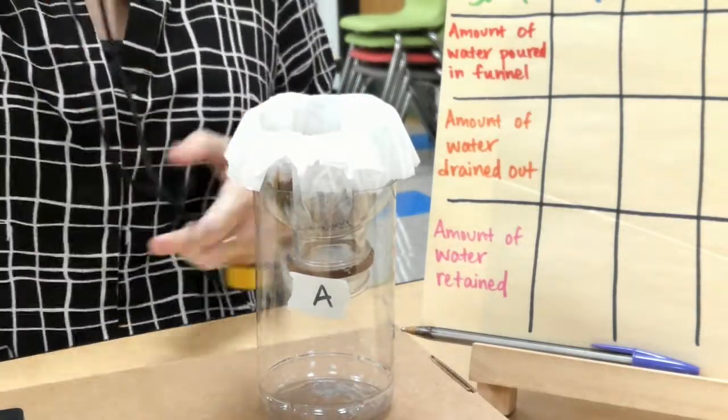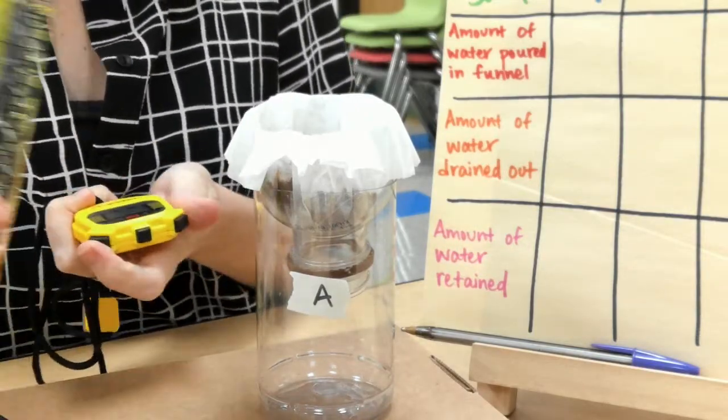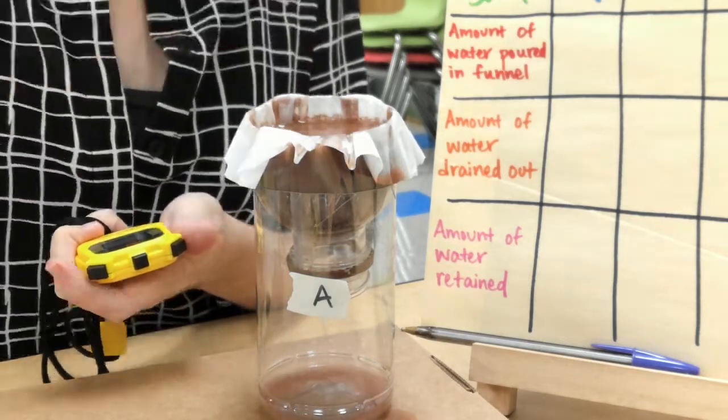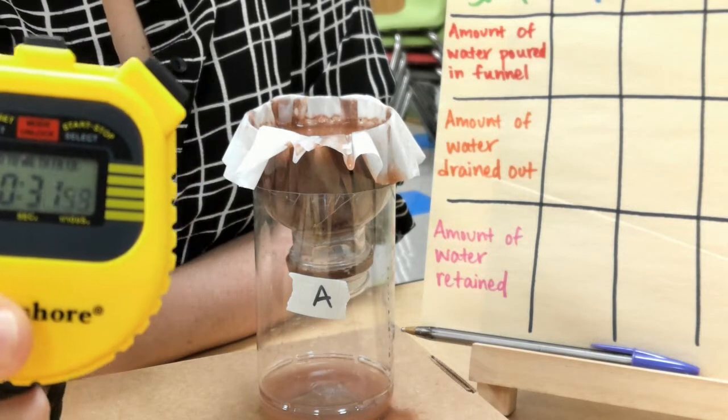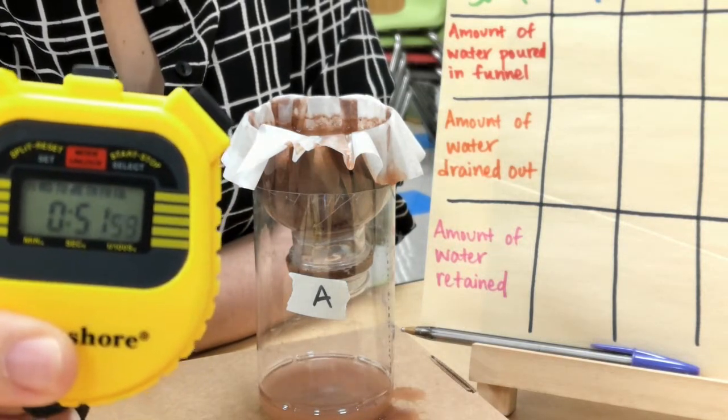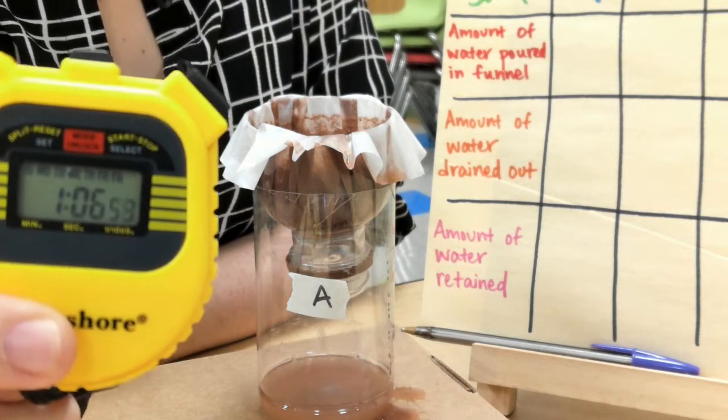Step number six, carefully pour that water over the soil. If it doesn't go down in time, just pour it in small batches because you don't want any to pour over your funnel and get wasted onto the top of the table.